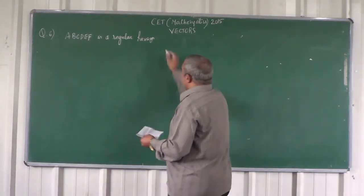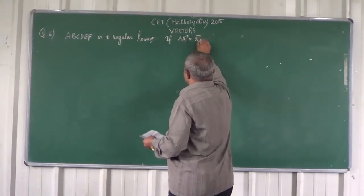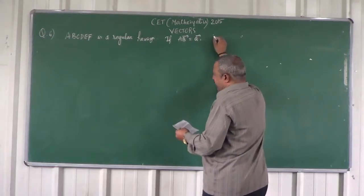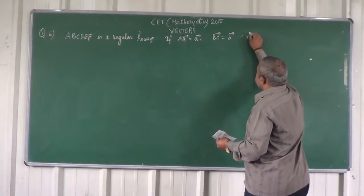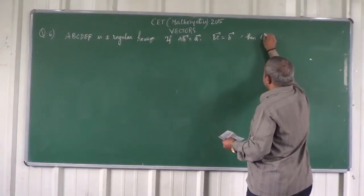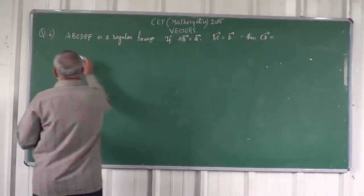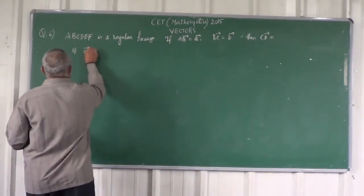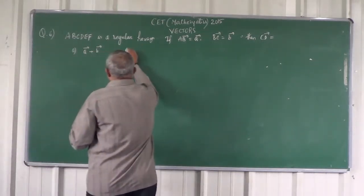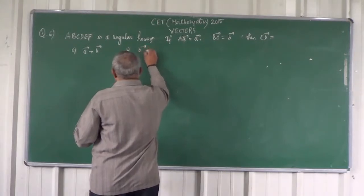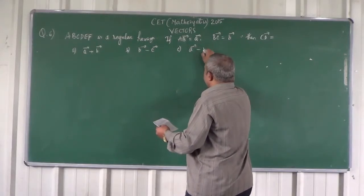If vector AB equals vector A, and vector BC equals vector B, then vector CD equals — you need to find it. The four options are: Option A: vector A equals vector B; Option B: vector B minus vector C; Option C: vector A minus vector B; Option D: none of the above.